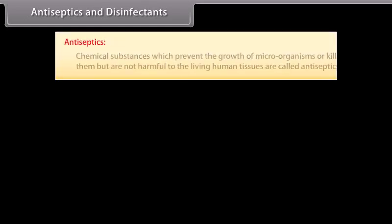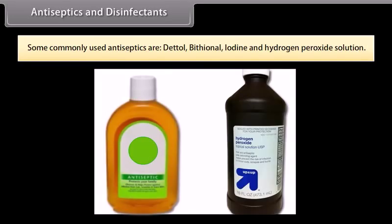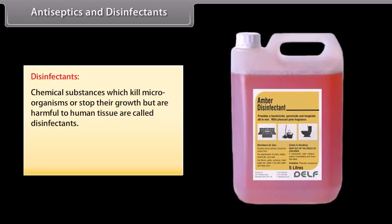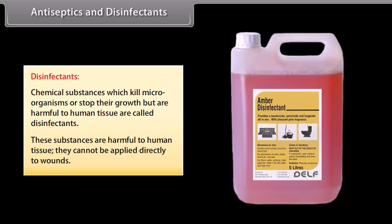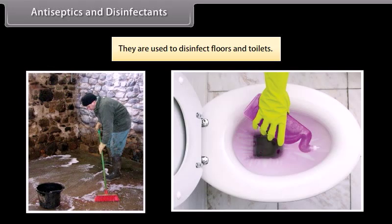Antiseptics: chemical substances which prevent the growth of microorganisms or kill them but are not harmful to living human tissues are called antiseptics. They are applied to wounds, ulcers, and diseased skin surfaces. Some commonly used antiseptics are Dettol, bithionol, iodine, and hydrogen peroxide solution. Disinfectants: chemical substances which kill microorganisms or stop their growth but are harmful to human tissues are called disinfectants. They cannot be applied directly to wounds and are used to disinfect floors and toilets. For example, phenol, sulfur dioxide, and chlorine.